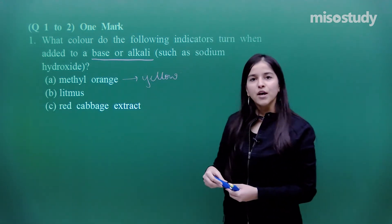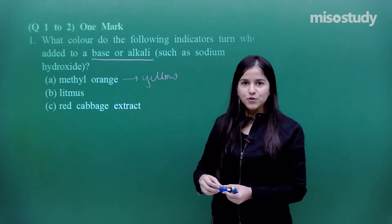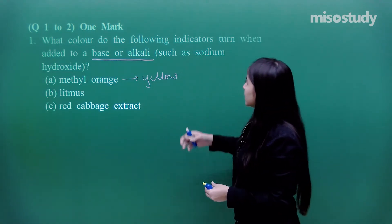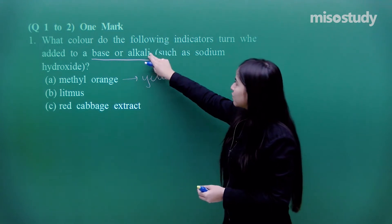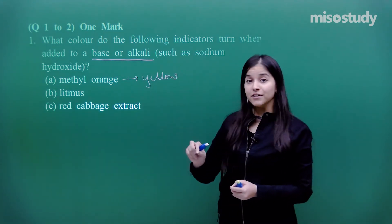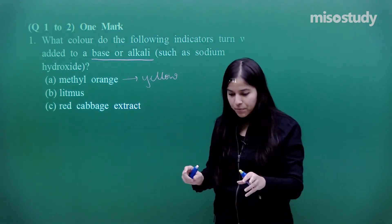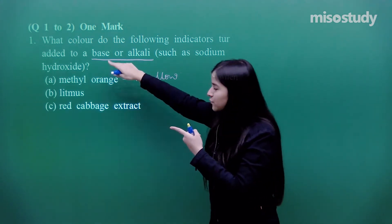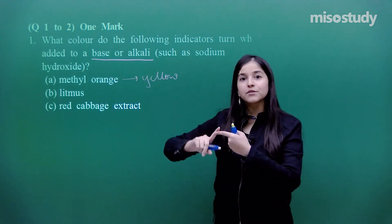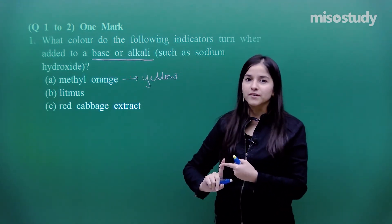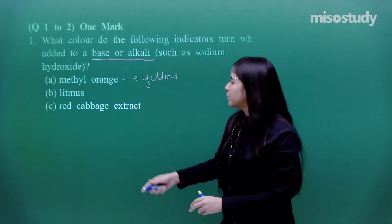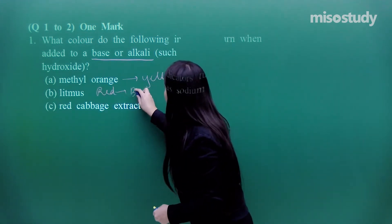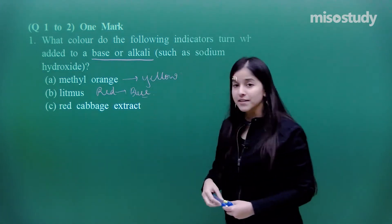For acid, whenever we add acid, methyl orange turns into red colour. For litmus: whenever we try to add alkali, litmus paper in the case of alkali — in the case of base — base stands for B, that means it will get converted into blue colour. So red to blue colour is the conversion. The litmus got converted from red colour to blue colour.